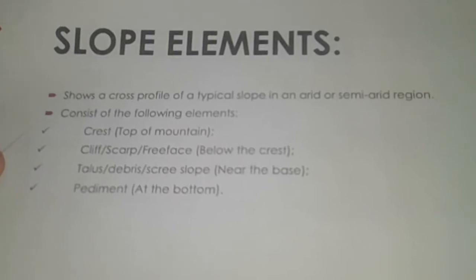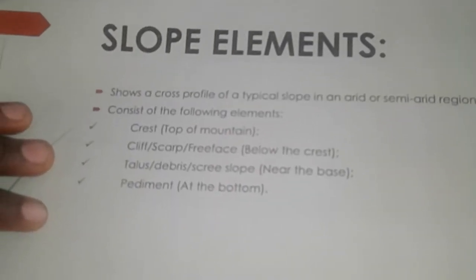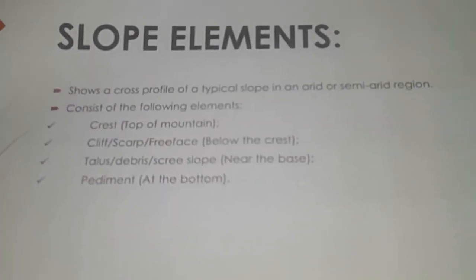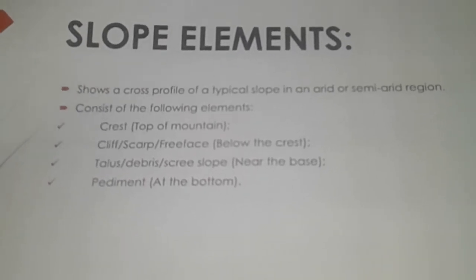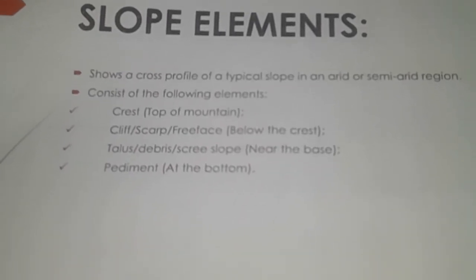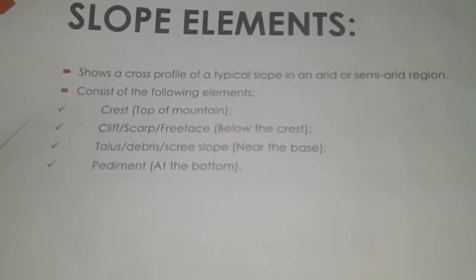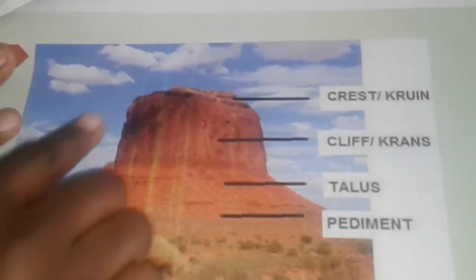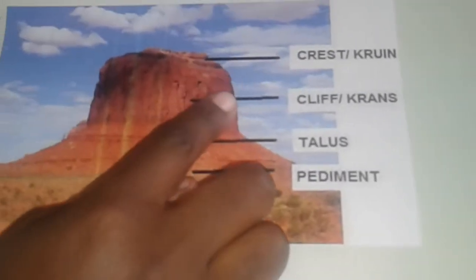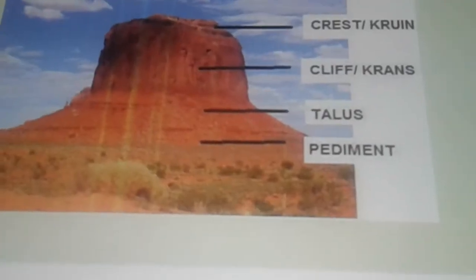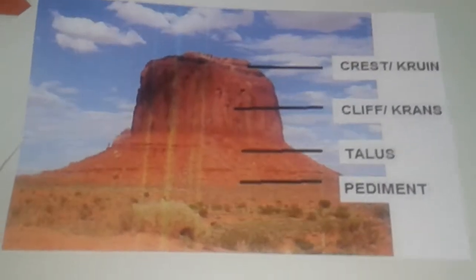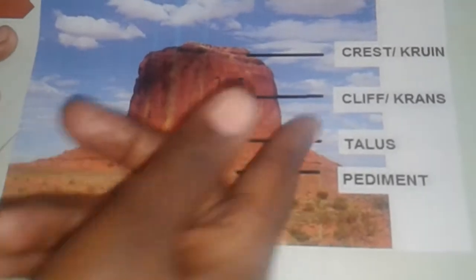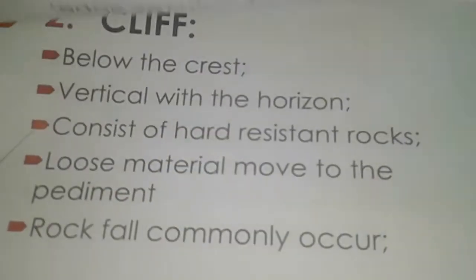When we look at slopes, we need to identify the elements of a slope — what you see in a side view of a mountain. We have the crest, which is the top of the mountain. Below the crest is the cliff, also known as the scarp or free face. Below the cliff is the talus, or debris slope, near the base. At the bottom we have the pediment. The sharp break that separates the talus and the pediment is called a nick point.